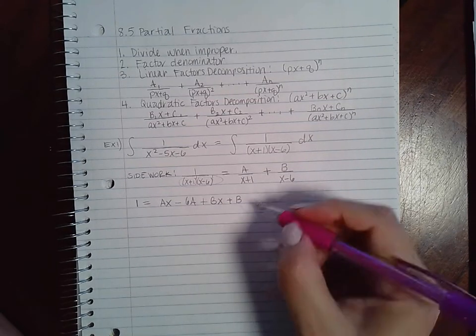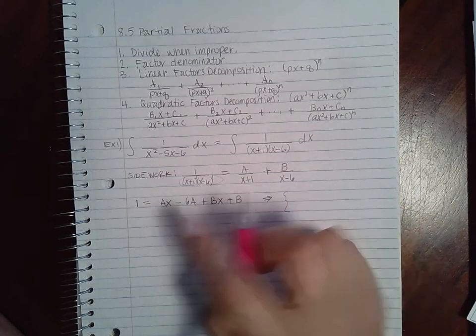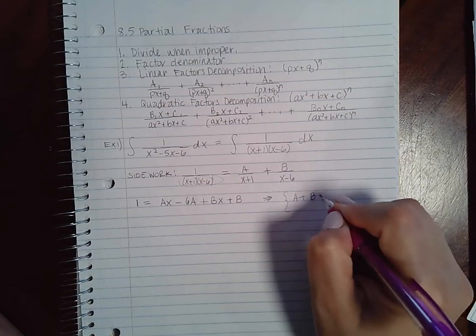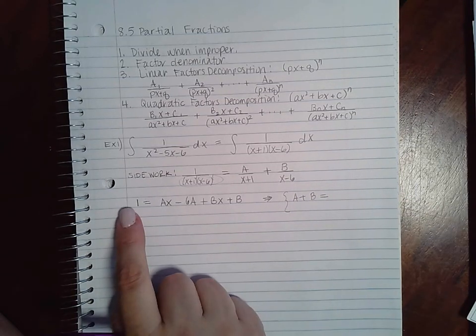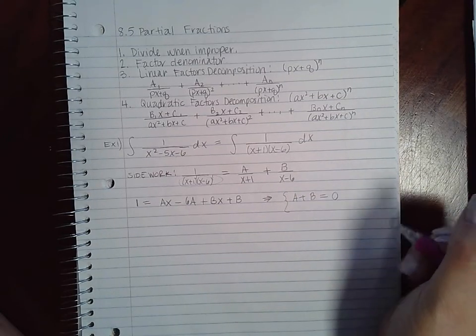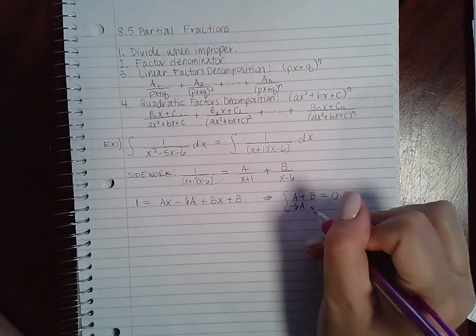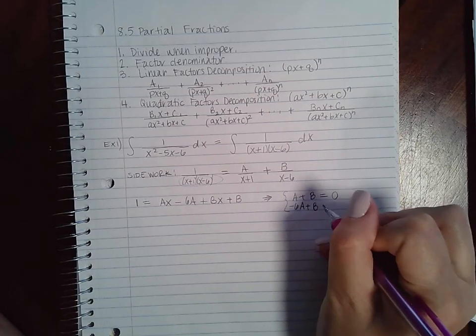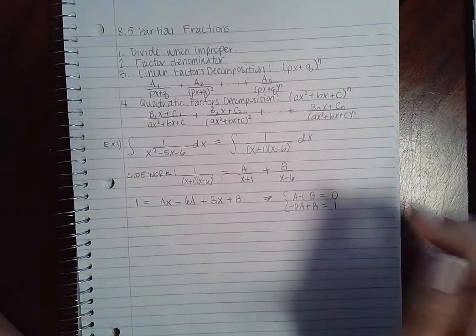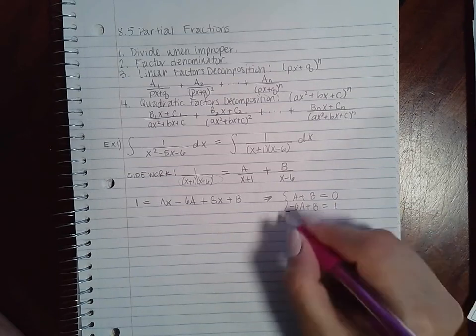Now here what we're going to do is we're going to set up a system of equations. So we're going to take the coefficient of x and equal it to the coefficient of x over here. Since there is no x, the coefficient is zero. We're going to do the same thing for the constants, the terms that do not have a variable, and the constant over here is one. So these are the two equations that we have.